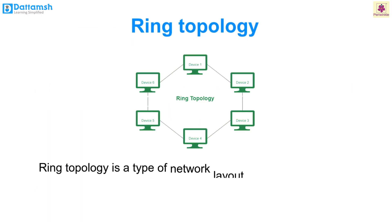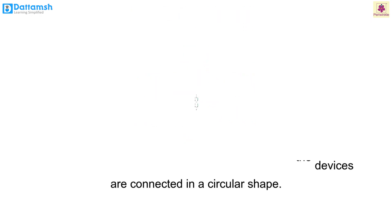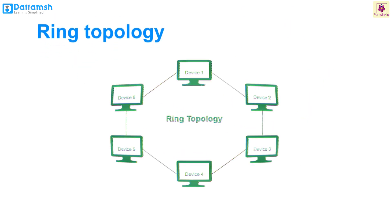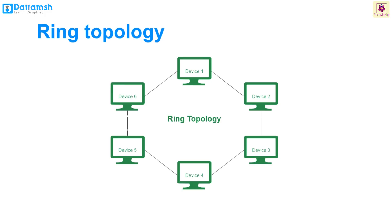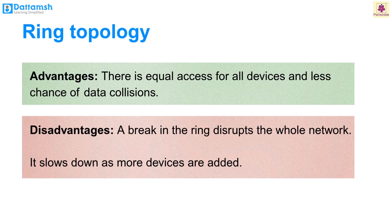Ring topology. Ring topology is a network layout where all devices are connected in a circular shape. Imagine a circle of friends holding hands — each person holds hands with the person on their left and right. Similarly, in ring topology each device is connected to two neighbours, one on each side. Data travels in one direction, moving from one device to the next in a circle until it reaches the intended recipient. Advantages: equal access for all devices and less chance of data collisions. Disadvantages: a break in the ring disrupts the whole network, and it slows down as more devices are added.